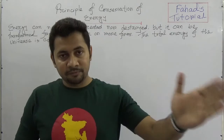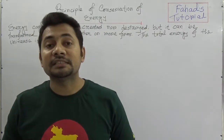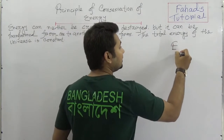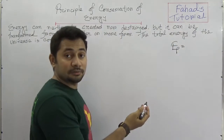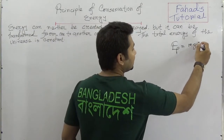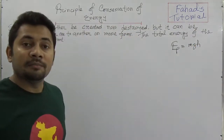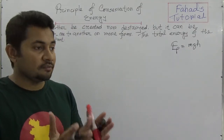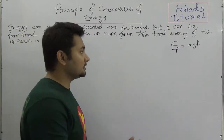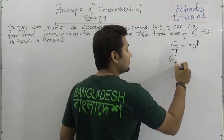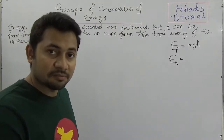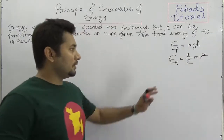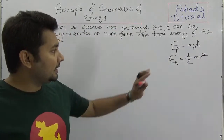This class follows previous classes on potential energy and kinetic energy. You already know that potential energy EP is equal to MGH — potential energy is acquired by the changing of the normal positions or configurations of any object. Kinetic energy is acquired by the motion or velocity of an object, so EK is equal to half M V squared.